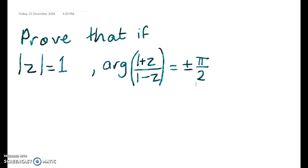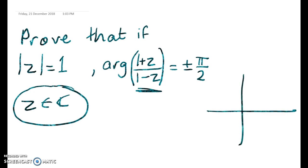We have to prove that if we've got the modulus of a complex number z, so we're given that z is a complex number, so that's one way to write that, then the argument of (1+z)/(1-z) is plus or minus π/2. So let's see what on earth that all means.